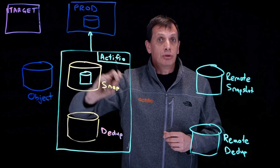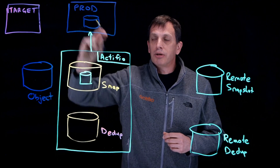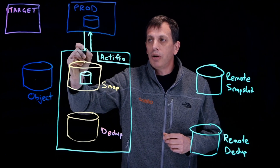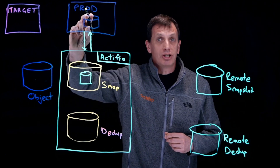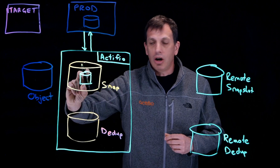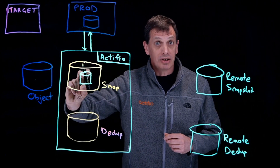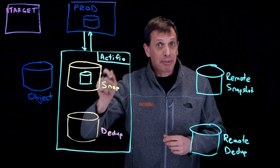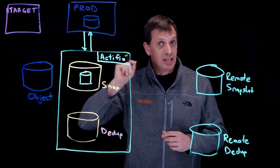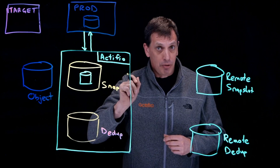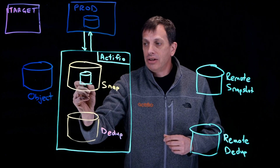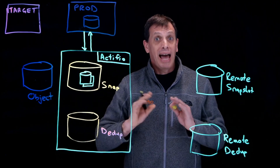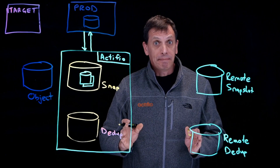The Actifio connector on the production host then coordinates data copy and copies an image of this production database onto the staging disk. And once the complete copy is made, application consistent in native format, then the Actifio snapshot engine creates a snapshot of it and the job is complete.